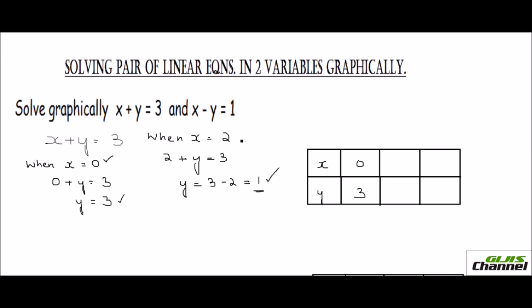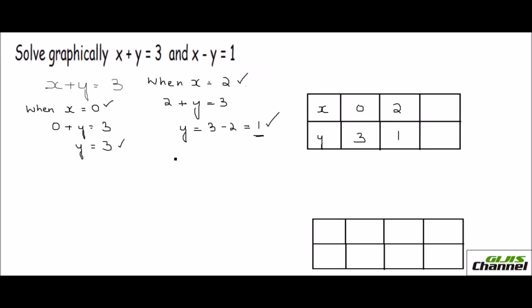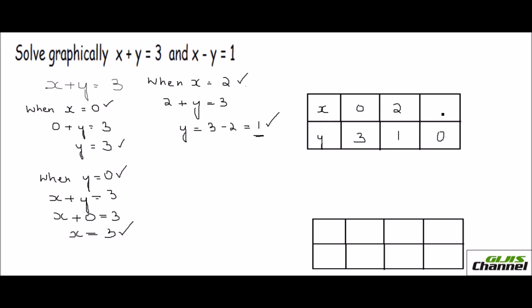So those are your ordered pairs. When x is 2, y is 1. Now let's take y equals 0 — what happens to x? It is x plus 0 equals 3, so x is 3. When y is 0, your x is 3. That completes the table.